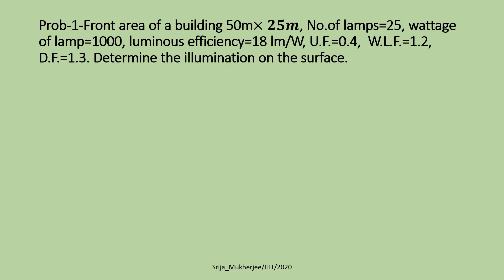Problem 1: The front area of a building measures 50 m × 25 m. Number of lamps is 25, wattage of each lamp is 1000 W, luminous efficacy is 18 lumens per watt, utilization factor is 0.4, waste light factor is 1.2, and depreciation factor is 1.3. Determine the average illumination on the surface.